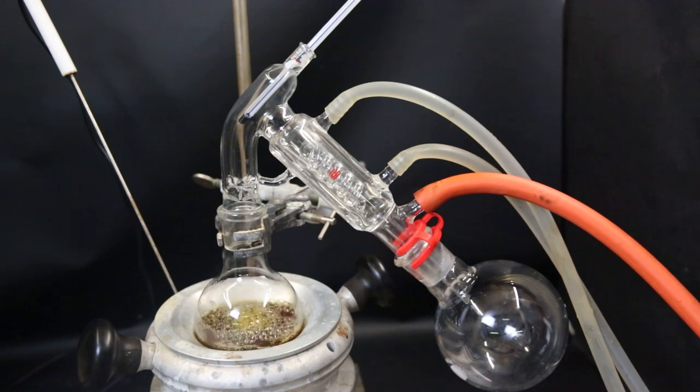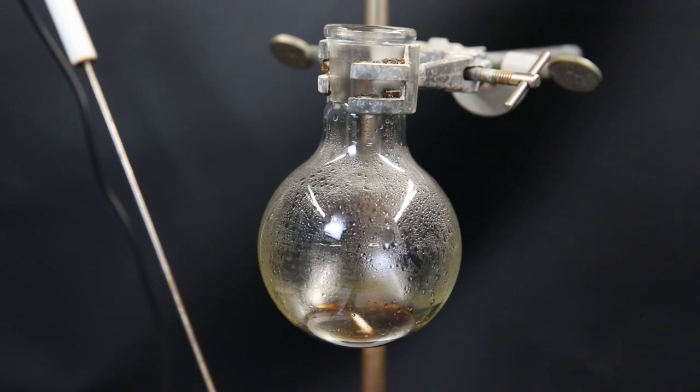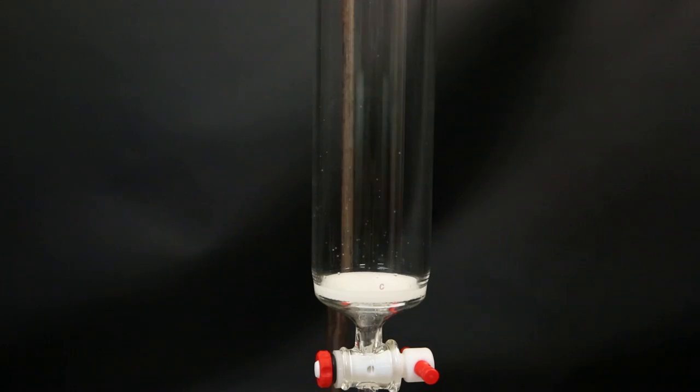Now I set the filtrate up for a short path vacuum distillation to remove all of the DCM. After no more DCM seems to come over, I stop the distillation and I am left with a brown-red liquid that contains some solid.